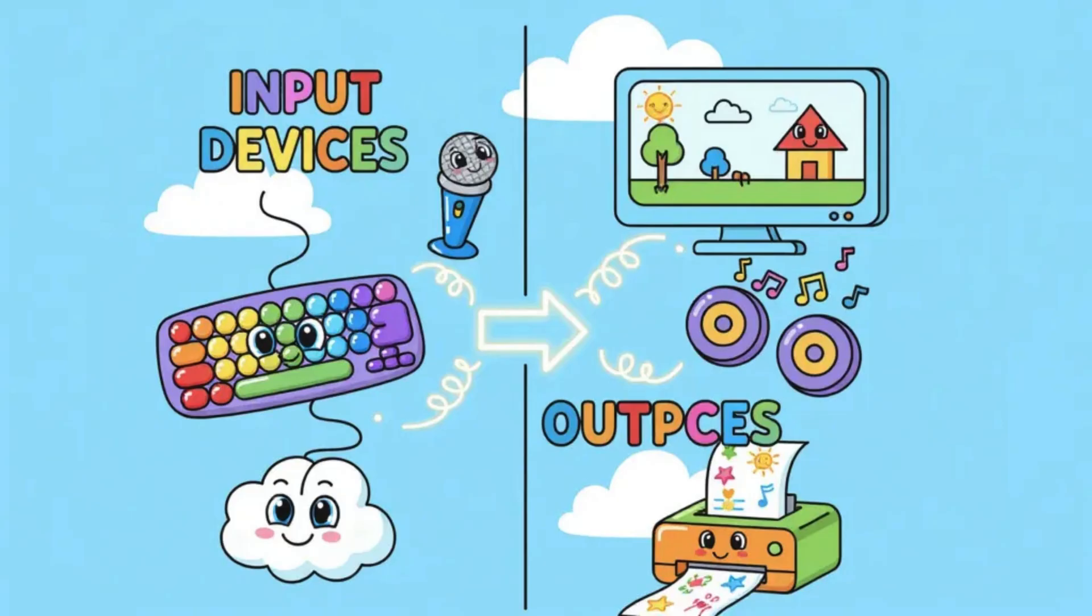Without a mouse, moving around the computer would be very difficult. Another good example is the microphone, which allows us to talk and have the computer listen, whether for recording our voice, using voice commands, or speaking in online meetings. In short, input devices act as our hands and our voice. They make it possible for us to communicate with the computer in ways that it can understand.